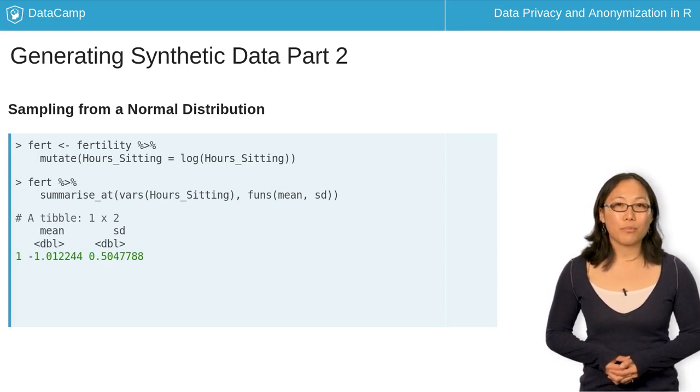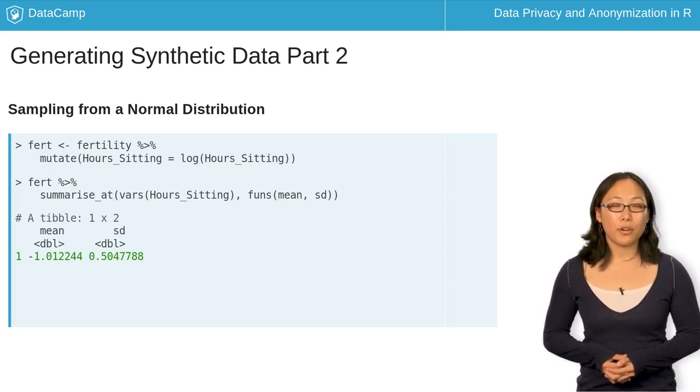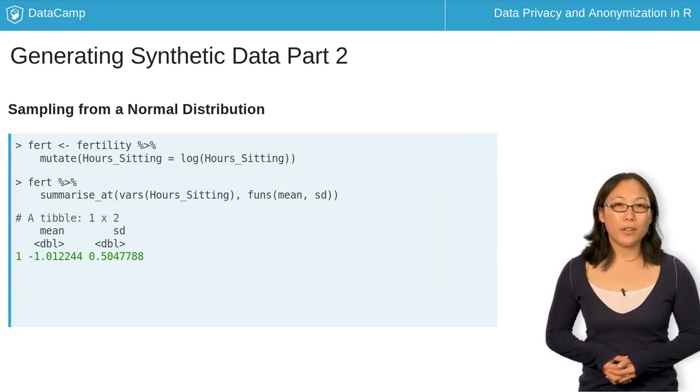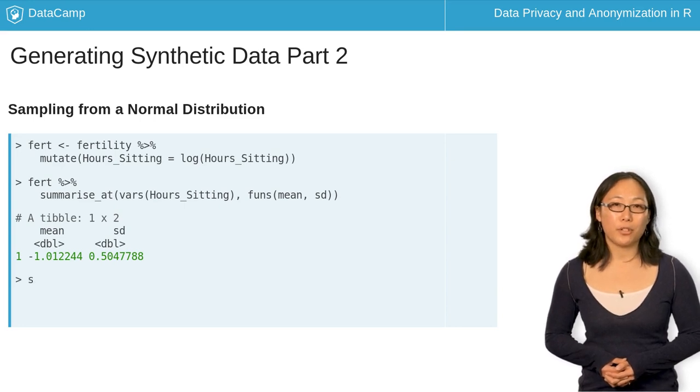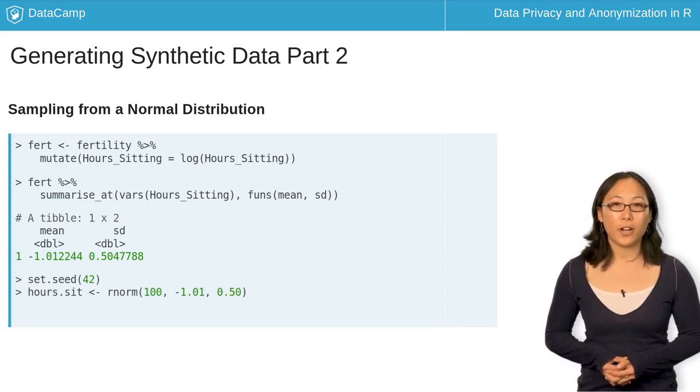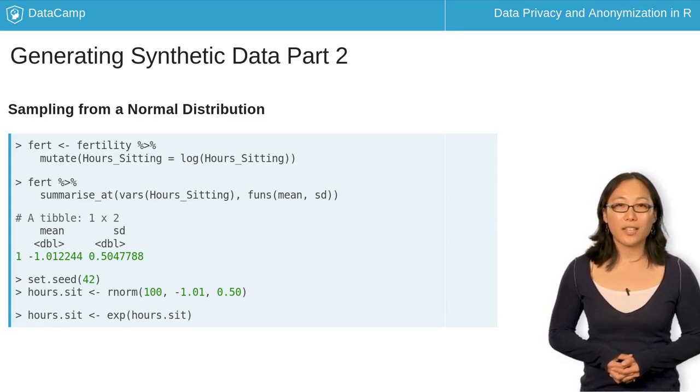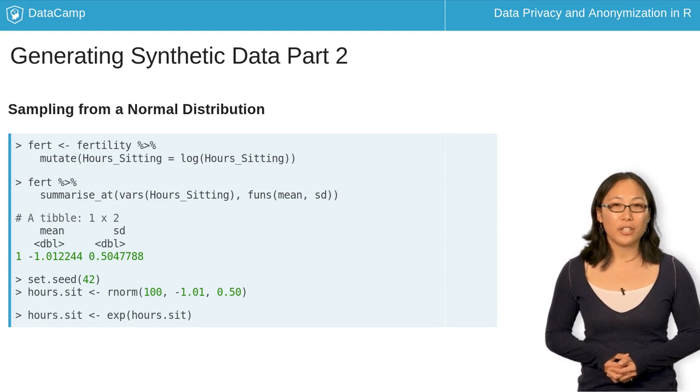You can see that average is roughly minus 1.01 and the standard deviation is about 0.50. You can now sample from a normal distribution by using the rNorm function. Remember to transform back the data using the exponential, that is, the exp function, since you applied log transformation before taking the mean and standard deviation.